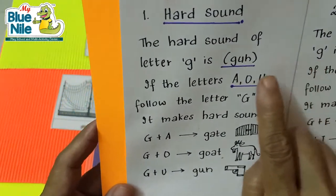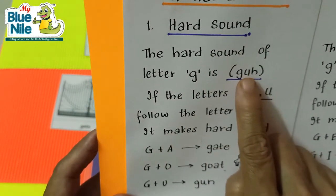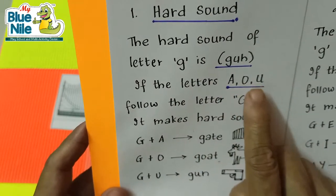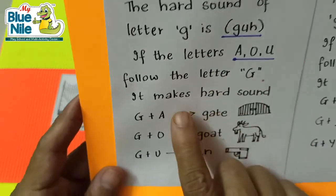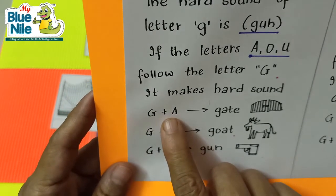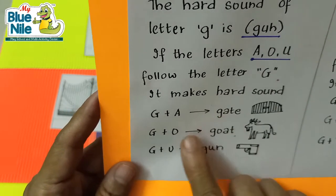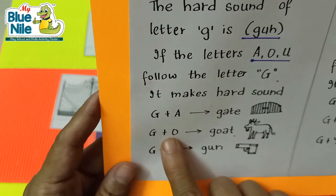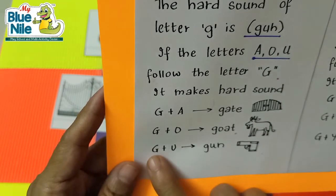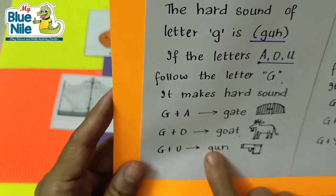The hard sound of letter G is G. If the letters A, O, or U follow the letter G, it makes the hard sound. G plus A: gate. G plus O: goat. G plus U: gun. So here G makes the hard sound.